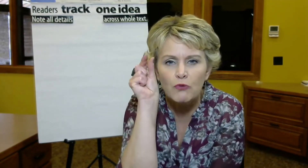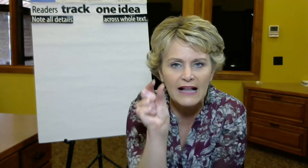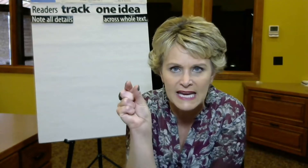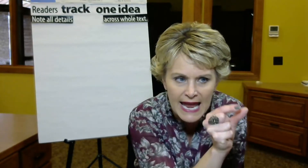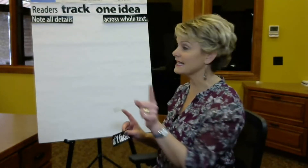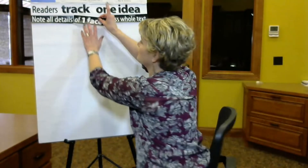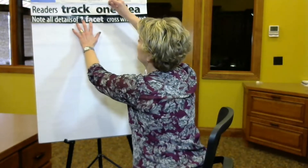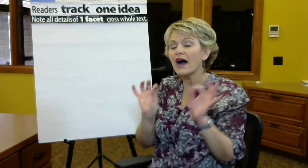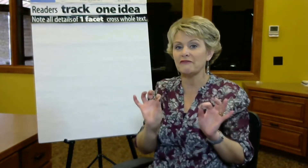It's like a spotlight — you only look at one element, one facet, one thing from beginning, middle to end, and you collect all the details. So the difference between tracking and summarization is that tracking involves a lot of details, not just the most important, but only for one idea, one facet.